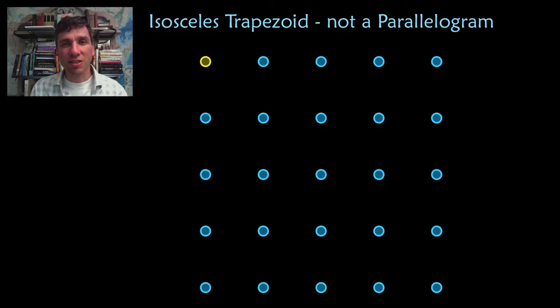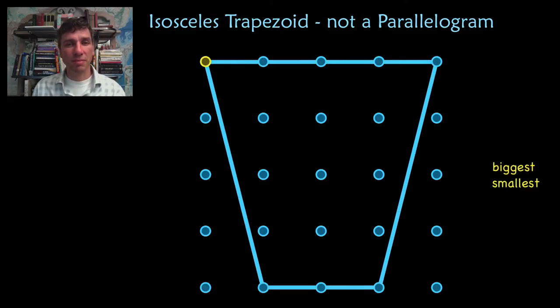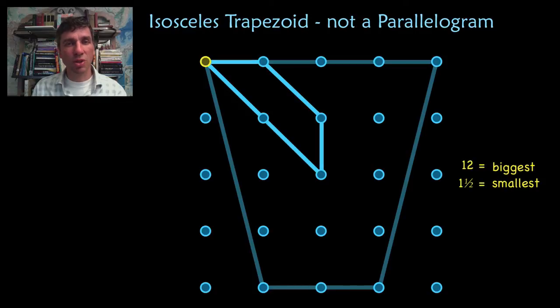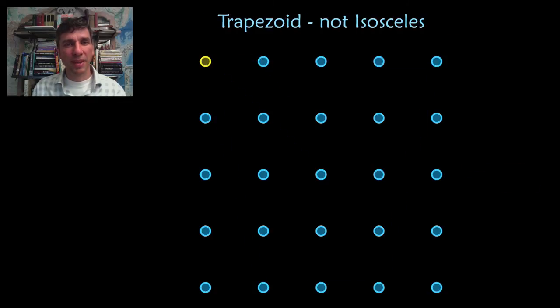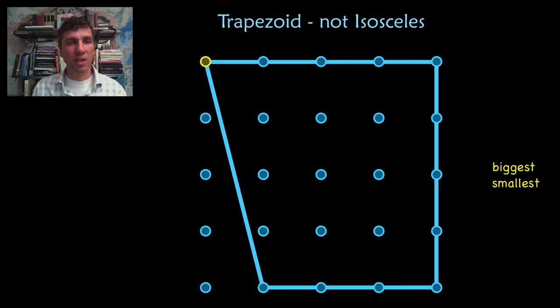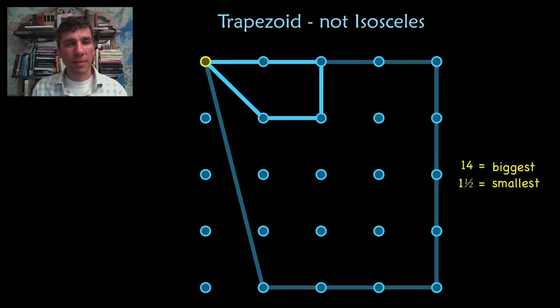The isosceles trapezoid that is biggest that is not a parallelogram and the smallest. There's the biggest and there's the smallest. How about a trapezoid that is not isosceles? The biggest one is certainly that and the smallest one, there it is.